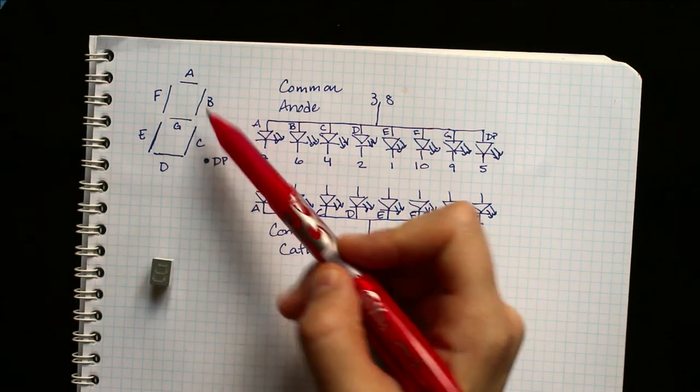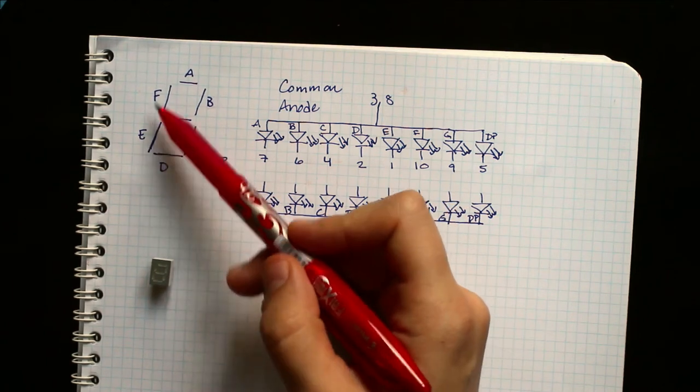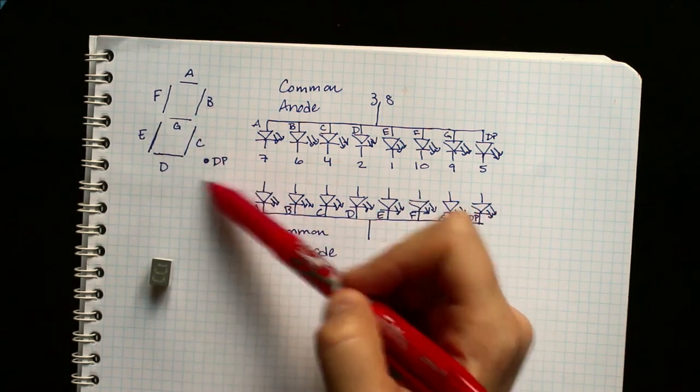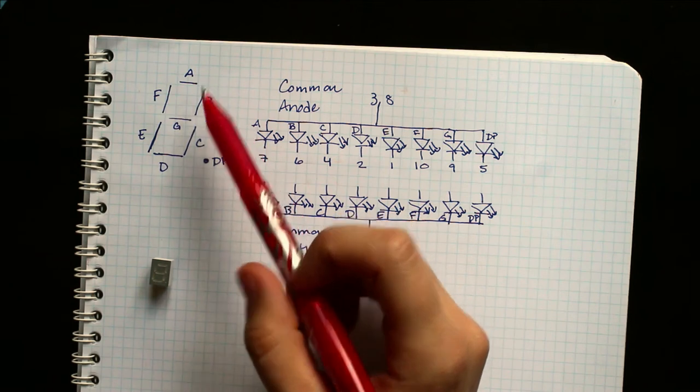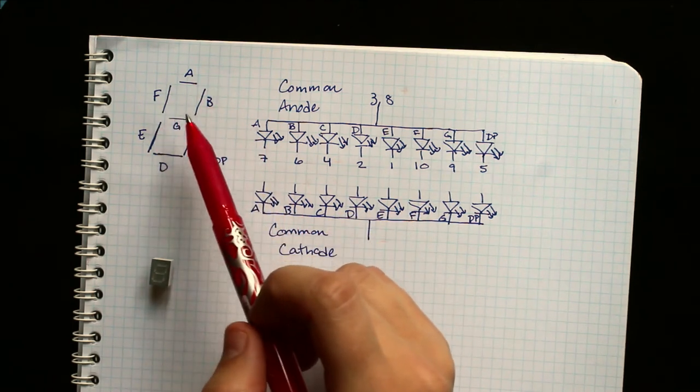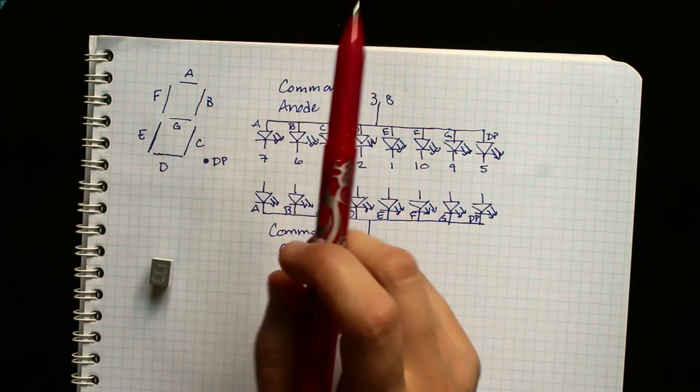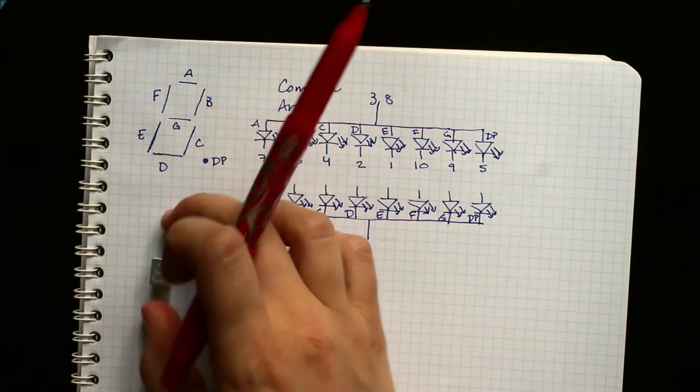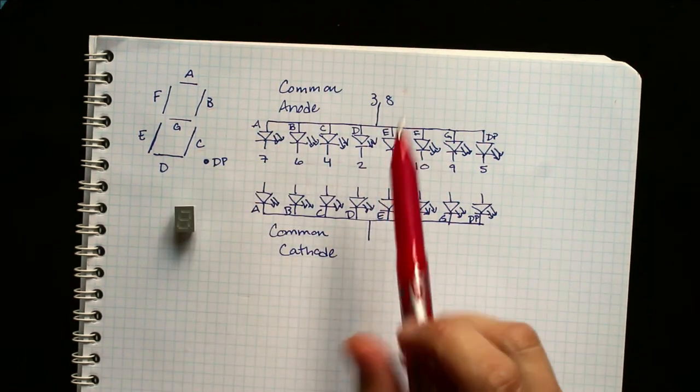So for example, this is A, B, C, D, E, F, and G, and then the decimal point. And this is consistent, at least as far as I've seen, with all datasheets for all of these LED segment displays.